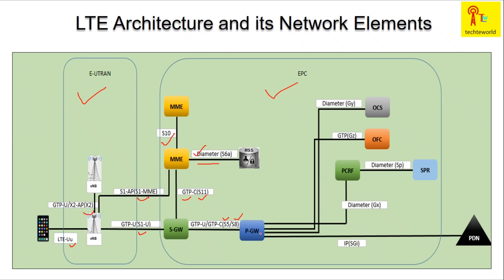The PGW is connected with the PCRF via the Gx interface, with the OFC via Gz, and with the OCS via Gy. The PCRF is connected to the SPR via the Sp interface, using the Diameter protocol. Finally, the PGW is connected with the PDN through the IP or SGi interface. This covers the interfaces between all these components.